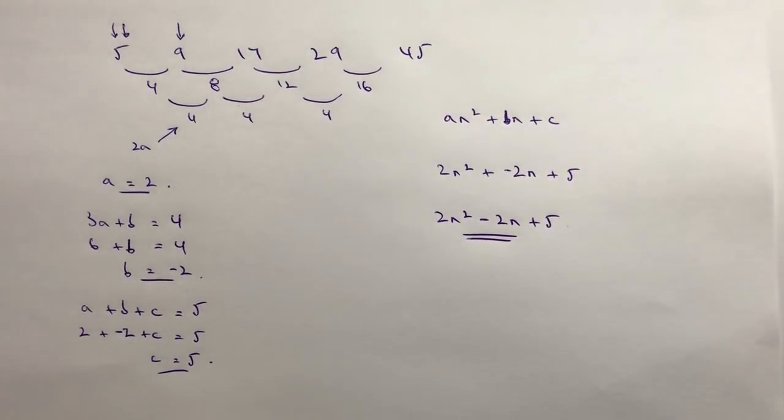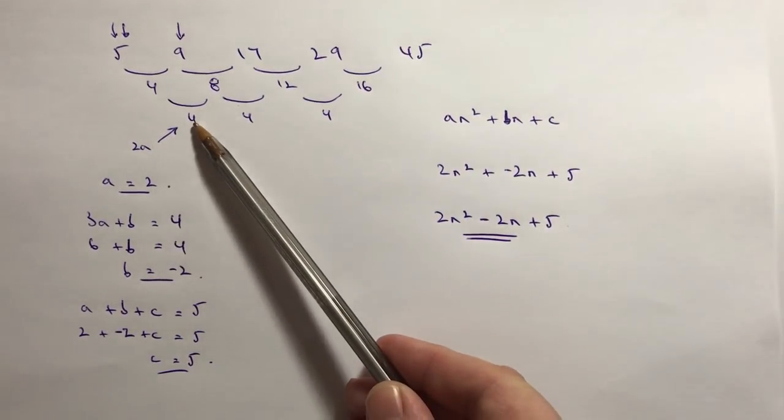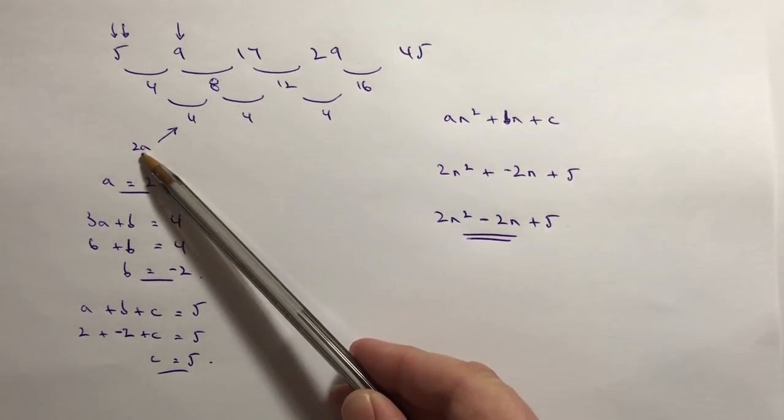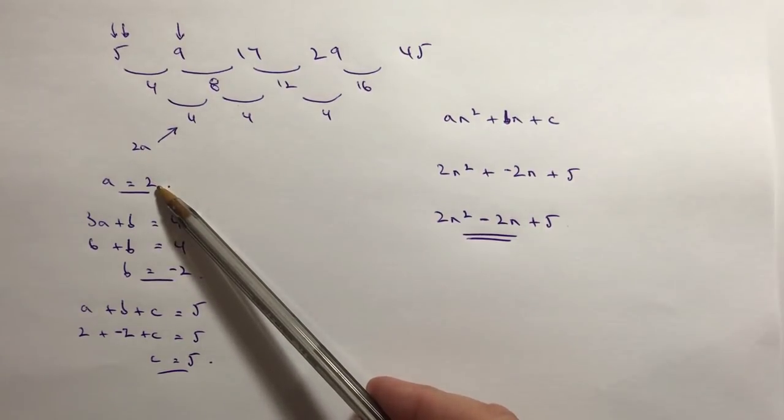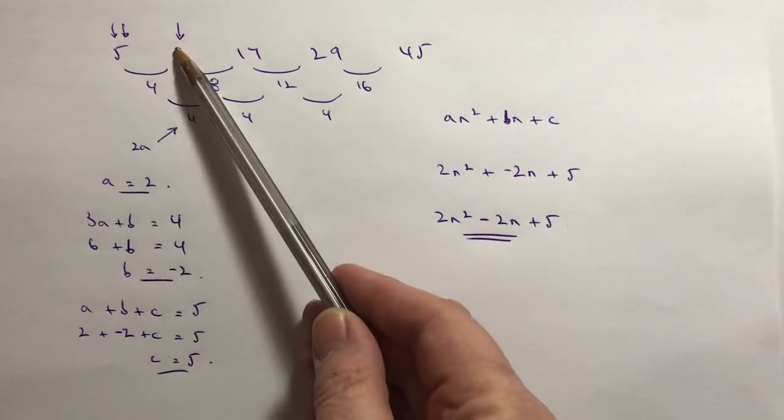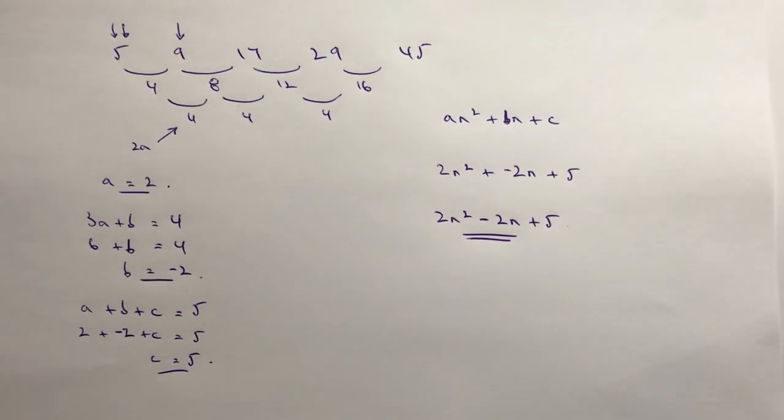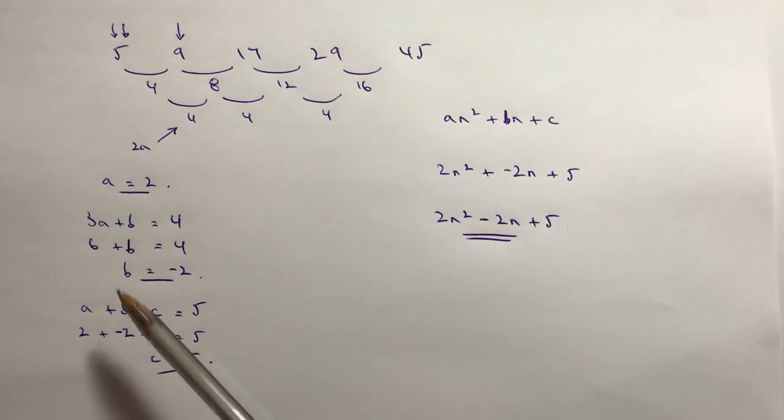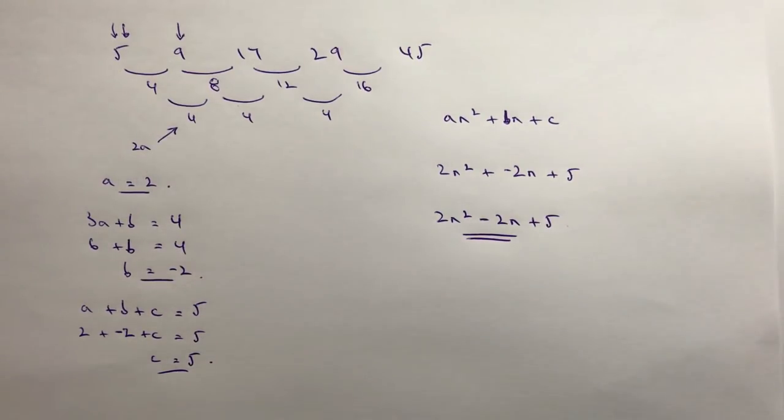So the key issues with this are: you need to remember the second difference is 2a and therefore a is half of it. You need to then remember 3a + b equals the difference between the first two numbers. And then you need to remember that a + b + c is equal to the first number. Now there are explanations as to why this happens, but essentially that's the way we deal with quadratic sequences.